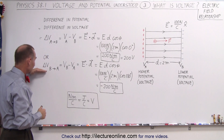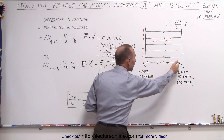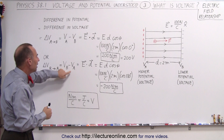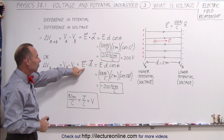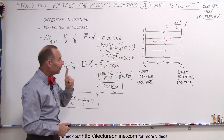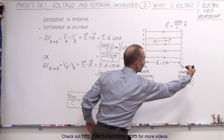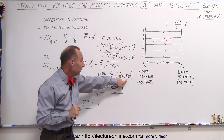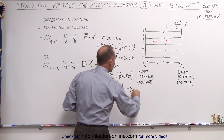We can also talk about the difference in voltage going from B to A. Since B is a lower potential and A is at a higher potential, going from B to A means a negative change — a negative difference. V_B minus V_A will give us a negative difference. It's still the dot product E times D times cosine of theta, but in this case the angle is 180 degrees because the electric field is directed to the right while the displacement going from B to A is directed to the left. The cosine of 180 degrees is negative one, and therefore we get negative 200 newton meters per coulomb, or negative 200 volts.